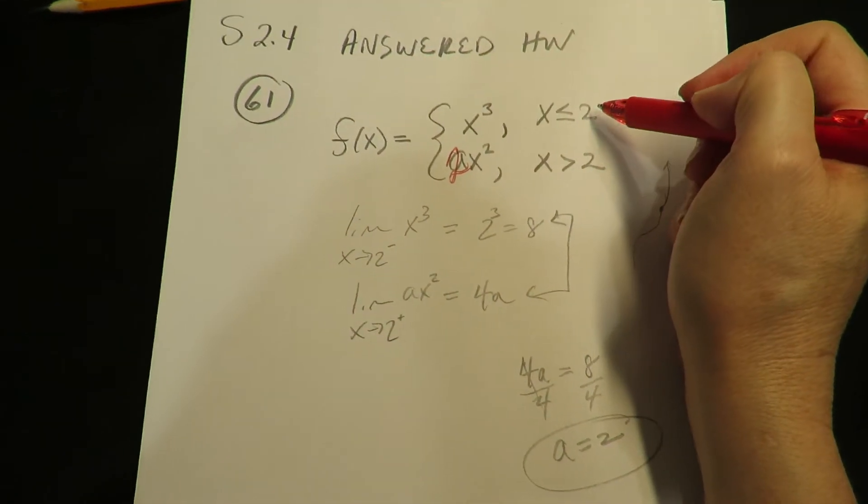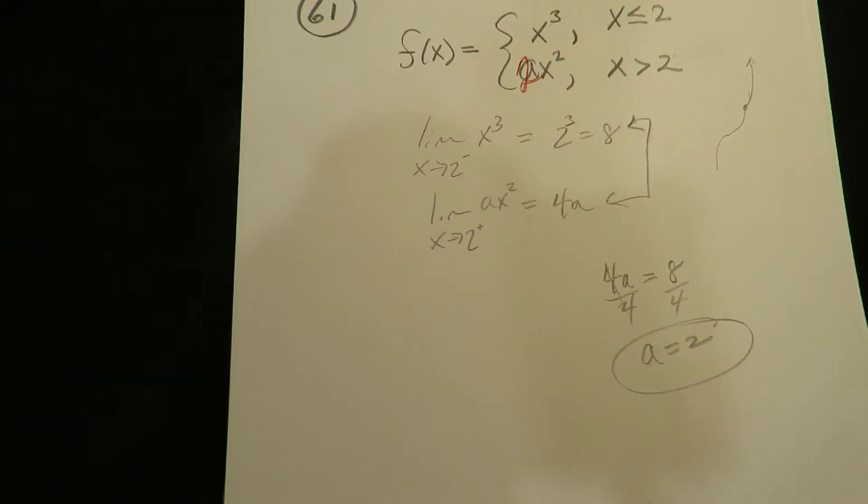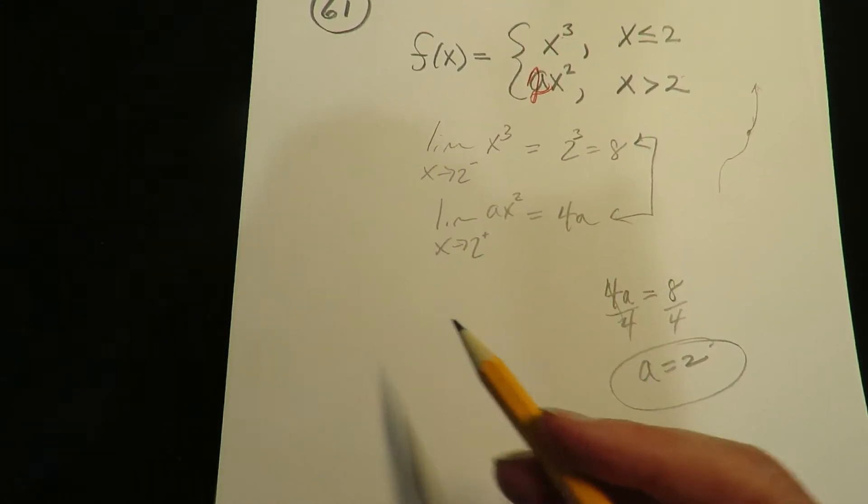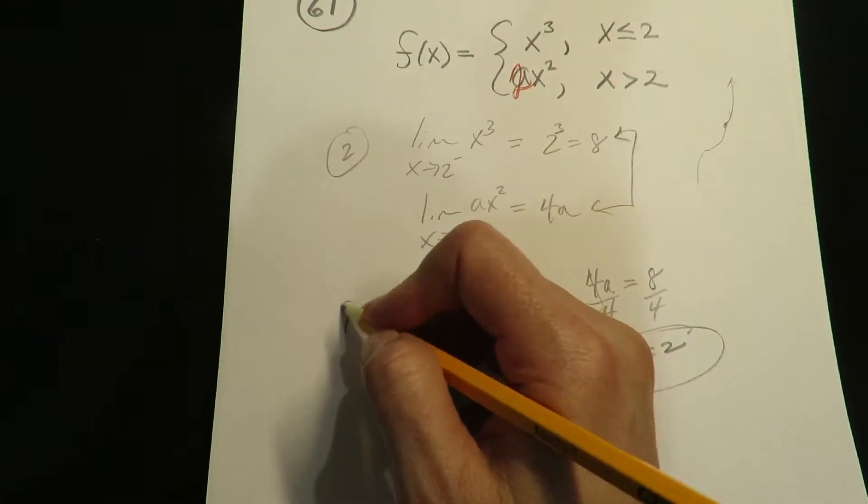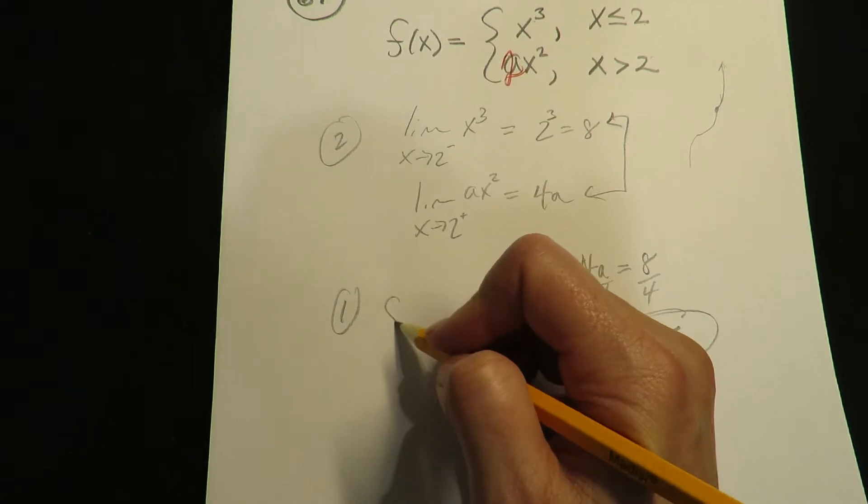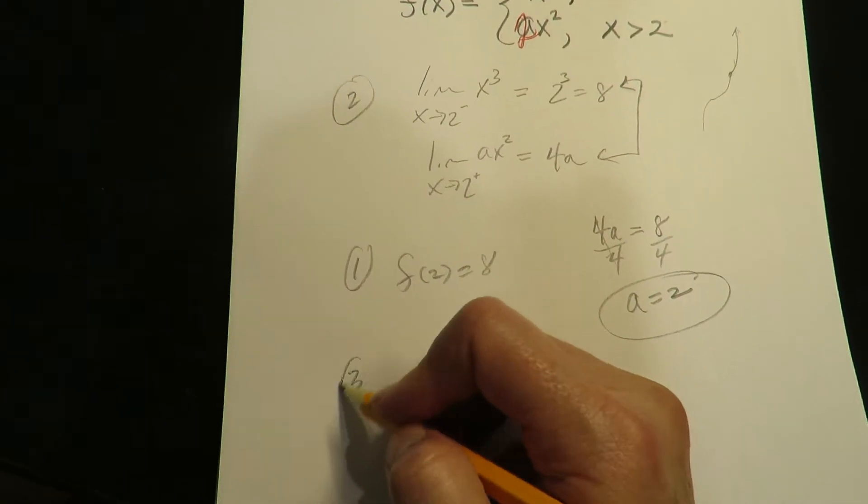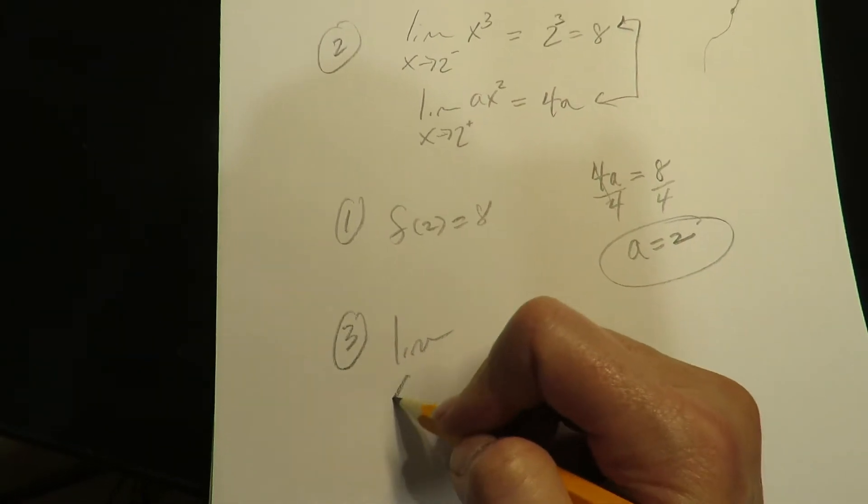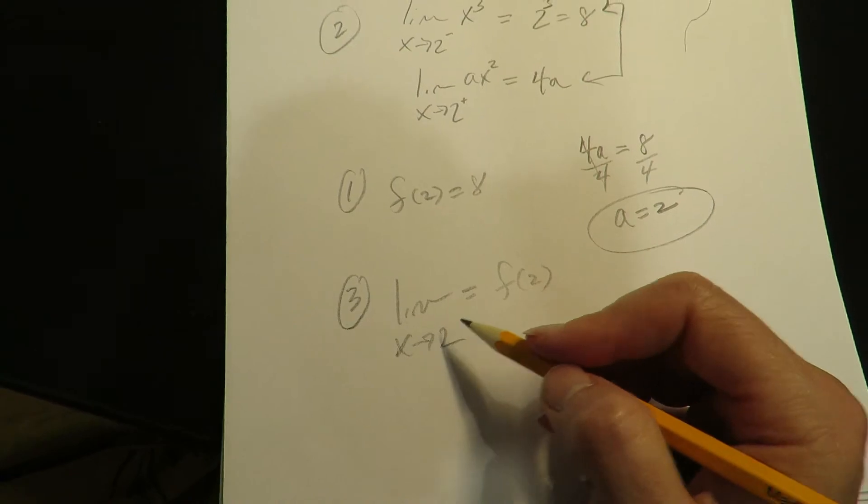I mean a sneaky way to do it is you just plug 2 into here, plug 2 in here, and then set them equal. I'm writing it as a limit, but remember the three conditions: this was condition number two, condition number one was the point exists meaning f of 2 equals 8, and then the third condition was that the two-sided limit is going to equal this point.